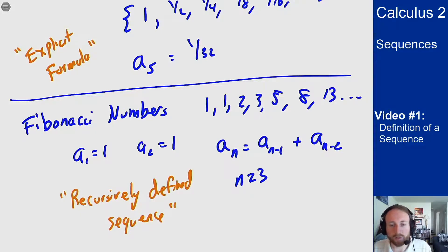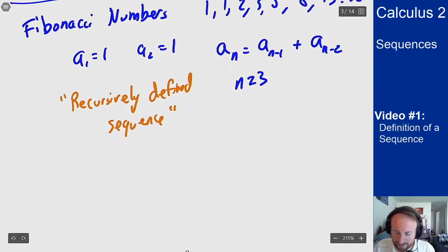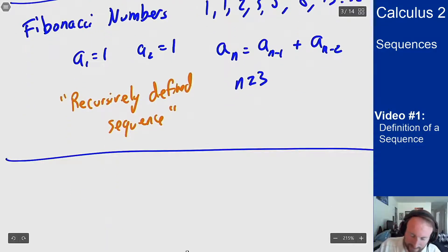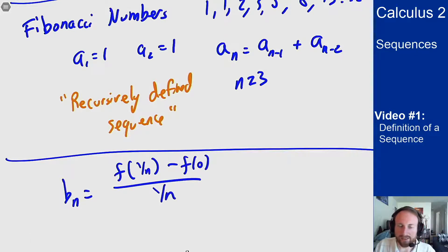There's one other way that we use sequences to do stuff going forward, and that's things like this. I could let my sequence bn be defined as f of 1 over n minus f of 0 over 1 over n, and this looks a lot like a derivative, and that's the point. These are going to be approximations to a derivative at 0.